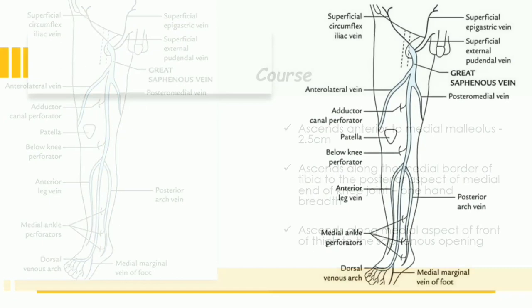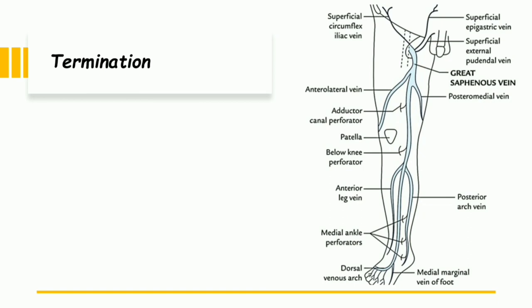Now what about the termination? There is an opening in the deep fascia. The deep fascia of the leg is also called the fascia lata. There is one opening in the fascia lata in the upper part of the thigh, which we call the subvenous opening. The subvenous vein enters this opening and fuses with the femoral vein, which is a deep vein. Above the subvenous opening there is a layer of areolar tissue called the Cribriform fascia. It is called Cribriform because large numbers of lymphatic vessels and veins pierce this fascia, giving it a perforated appearance. The subvenous vein pierces the Cribriform fascia and joins into the femoral vein which lies deep.